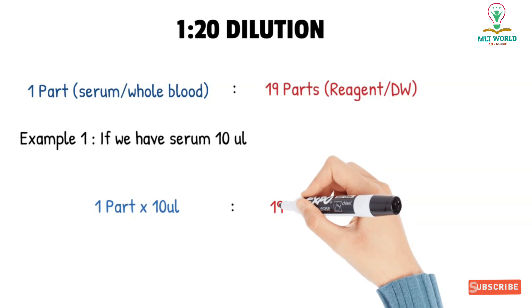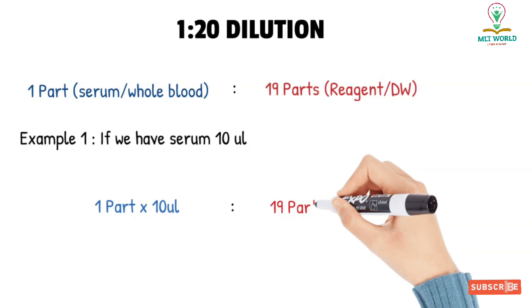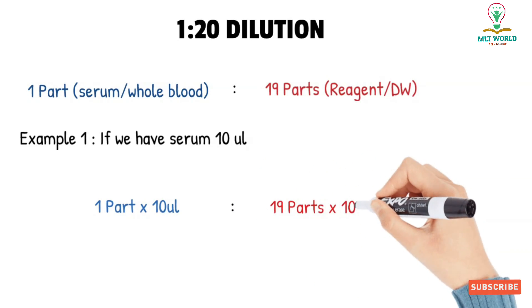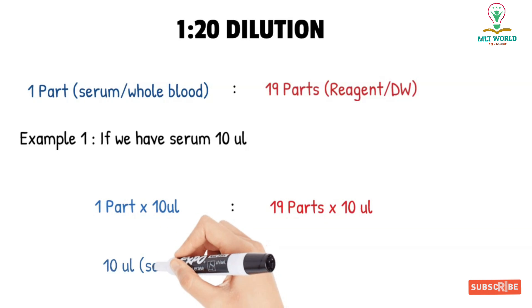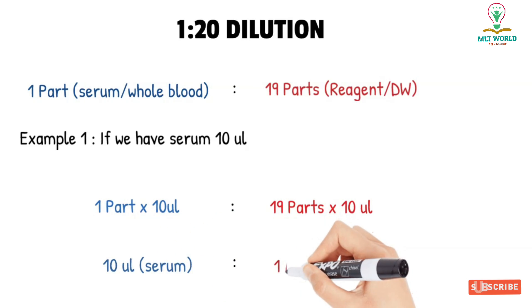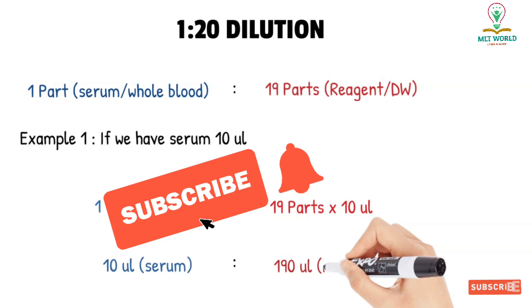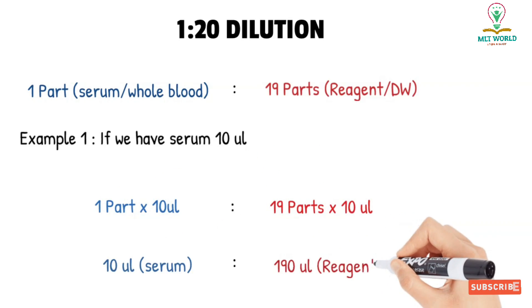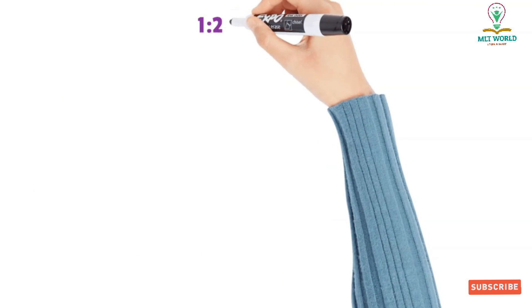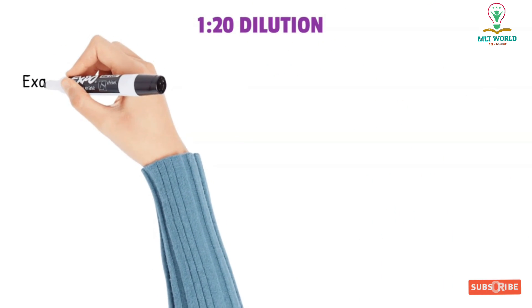That amount and unit, both we will multiply with one part of serum and 19 parts of reagent and distilled water. So if 10 microliter serum is needed, it means one part multiplied by 10 equals 10 microliter, and 19 parts of reagent means 19 multiplied by 10 microliter, it will come 190 microliter. So we will take 10 microliter serum and 190 microliter reagent, but our result we will multiply with 20.